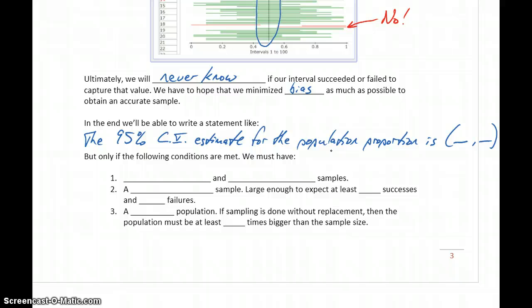But we need to keep in mind that this whole process works only if the following conditions are met. To construct these intervals, we need a random and independent sample, a large enough sample to expect at least 10 successes and 10 failures, and a big population. If sampling is done without replacement, meaning we select an item and can't pick it again, then the population must be at least 10 times bigger than the sample size.